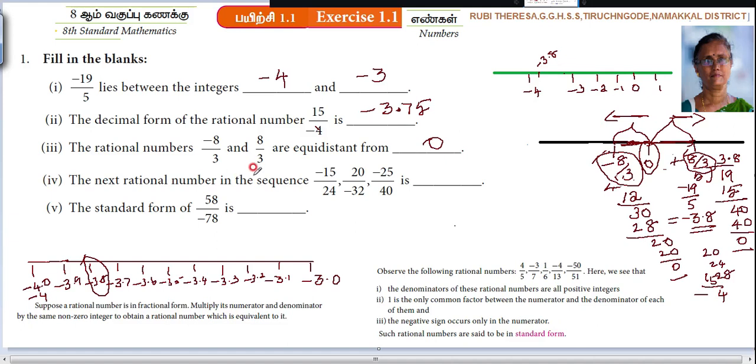The next rational number in the sequence. Just you see what type of rational numbers are there. Equal fractions. Here you see. Suppose a rational number is in fractional form. Multiply its numerator and denominator by the same non-zero integer to obtain a rational number which is equivalent to it. So equivalent fractions. So just you take this number, minus 15 by 24.